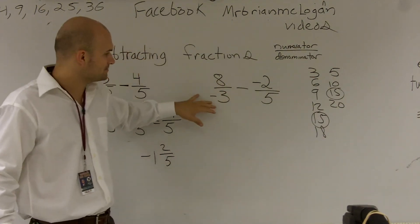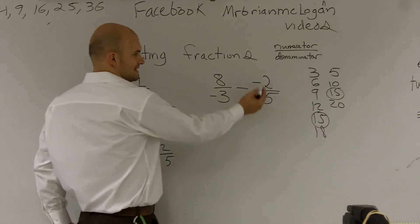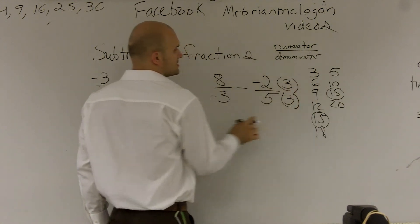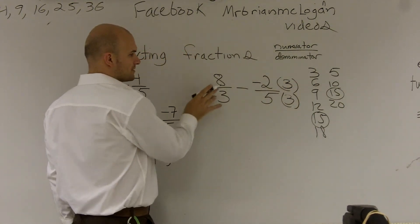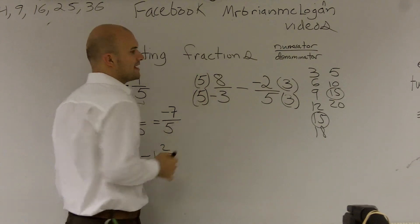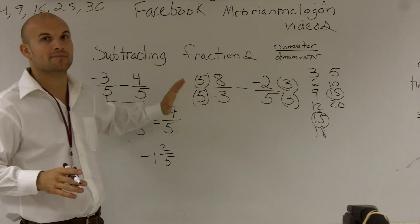To finish up the rest of this problem, to get this to be fifteen, I need to multiply by three. To get this to be fifteen, I need to multiply by five. Notice I'm multiplying the top and the bottom because to keep a fraction the same, you have to multiply the top and the bottom, right?